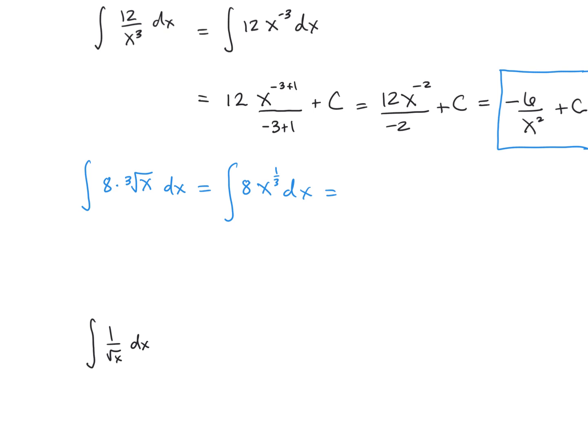And once again, we're going to keep our multiplied constant carrying along. We're going to have now adding 1 to the power. So we're going to have 1/3 plus 1 divided by 1/3 plus 1 down below, plus a constant C.